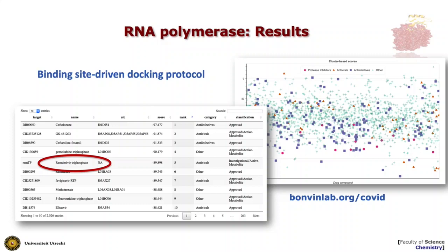The same screen was done for the RNA polymerase, taking about six days due to the larger system size. Here we used a classical HADDOCK binding site-driven docking protocol rather than a template shape-driven approach, because there was not enough structural information for a template-based protocol. In the top 10, an interesting compound is remdesivir triphosphate — the active form of remdesivir — which scores at number five.